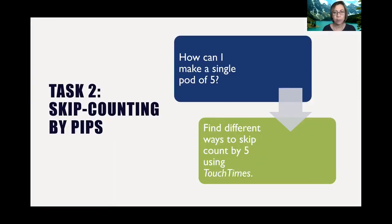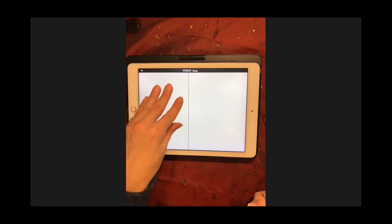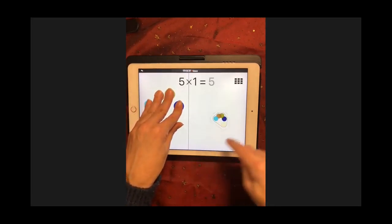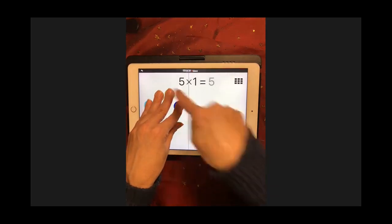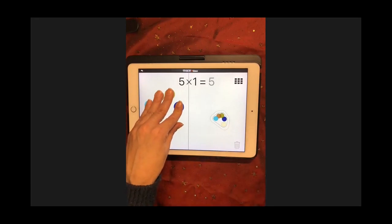Let's have a look at final few tasks beginning with how can I make a single pod of 5 and then moving from there to skip counting by 5 using touch times. Your task is to figure out how to make a single pod of 5. A single pod of 5 can also be called a 5 pod. This many countable items to 1 item seems easy but children don't initially find this easy to do or easy to understand.